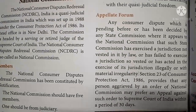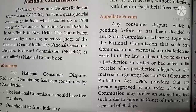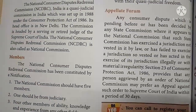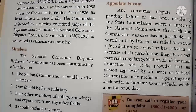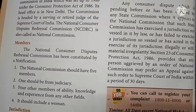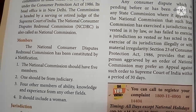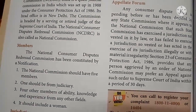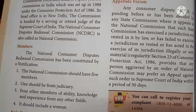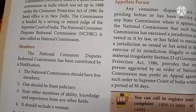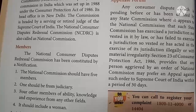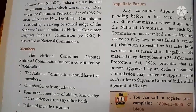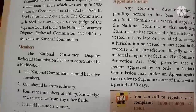Regarding the appellate forum: any consumer dispute decided by the state commission, where it appears to the national commission that such state commission has exercised a jurisdiction not vested in it by law, or failed to exercise jurisdiction so vested, or acted illegally or with material irregularity — in such cases, if the consumer or opposite party is not satisfied with the order of the state commission, they can appeal to the national level. The National Commission will pass an order, favourably or unfavourably, and may sometimes issue a reverse order.